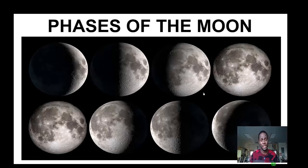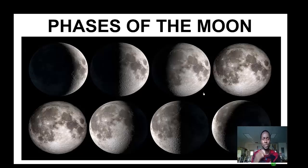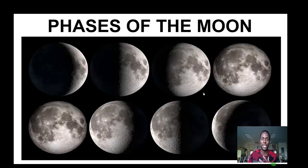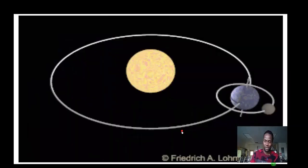Have you ever wondered why every time you look at the night sky, the shape of the moon — the portion that is lit and the size of the moon — seems very different from every other night? Welcome to a new video. Today we're going to be exploring the phases of the moon. Those shapes and sizes of the moon that you see every other night are called phases of the moon.